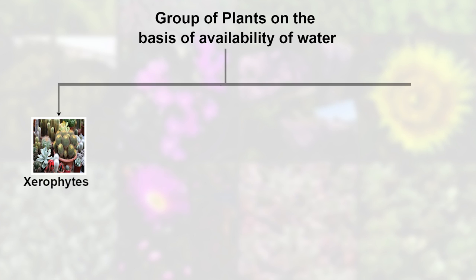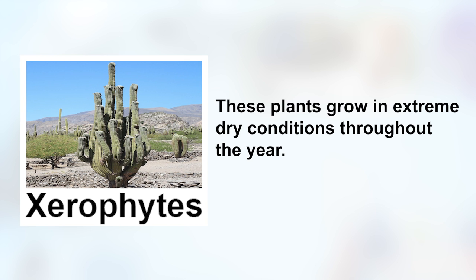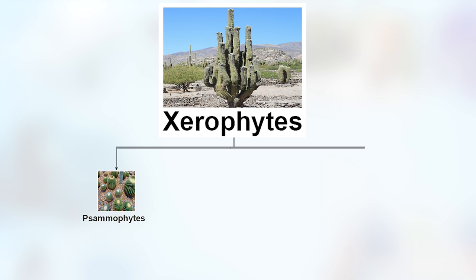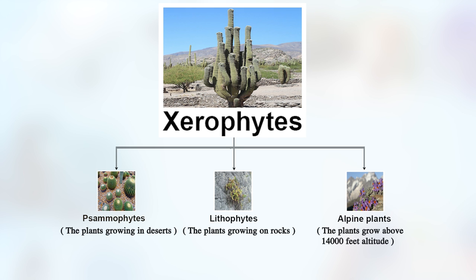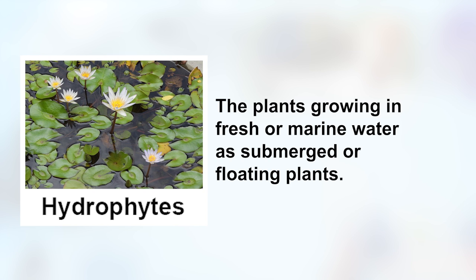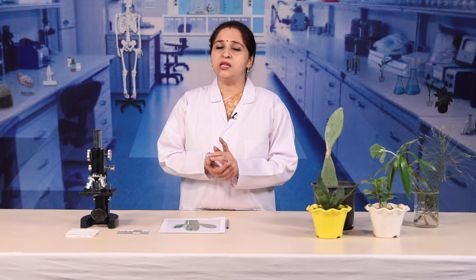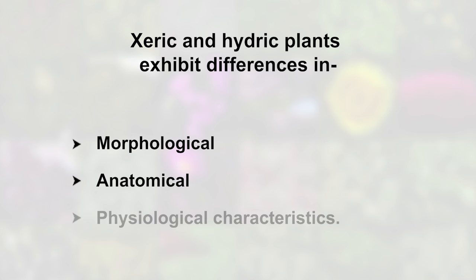These three groups are xerophytes, mesophytes and hydrophytes. Xerophytes are plants that grow in extreme dry conditions throughout the year. They may be xerophytes growing in deserts, lithophytes growing on rocks, or alpine plants that grow above 14,000 feet altitude. Mesophytes are plants that grow in optimum soil water conditions for a major part of the year. Hydrophytes are plants growing in fresh or marine water as submerged or floating plants. Plants living in xeric and hydric conditions exhibit marked differences in their morphological, anatomical and physiological characteristics.